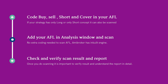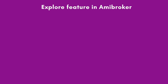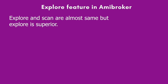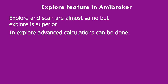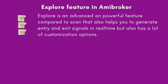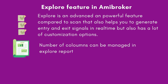After scan, the next topic is the explore feature in AMI Broker. Scan and explore are almost the same, but explore is a little superior. In explore, you can do some advanced calculations. Explore is an advanced and powerful feature compared to scan — it generates entry and exit signals in real time but also has a lot of customization options. In scanner, there is no scope for customization; it just tells you where entries and exits have triggered. In explore, you can manage the number of columns in the report, whereas in scanner you cannot.